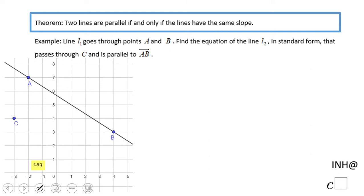Welcome to I Need Help. In this example, we're going to look at a problem where we are asked to find an equation of a parallel line to a given line. Line AB is given - we see the two points - and the parallel line goes through point C, which you see here.